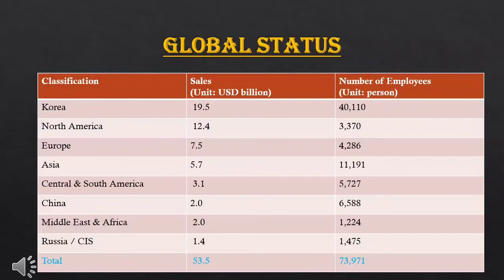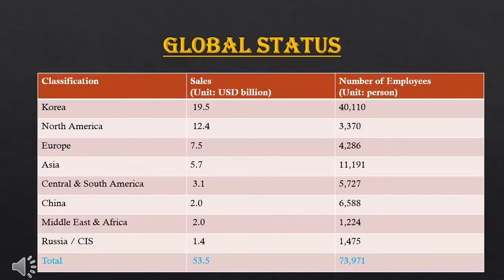The global status of LG industries in terms of sales and number of employees: Korea has sales of 19.5 billion US dollars and 14,110 employees; Europe has 7.5 billion US dollars and 4,286 employees; ECIA has 5.7 billion US dollars and 11,191 employees; China has 2.0 billion US dollars and 6,588 employees; Russia has 1.4 billion US dollars and 1,475 employees. Total sales are 53.5 billion US dollars with 73,971 employees.